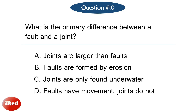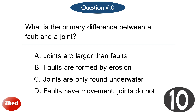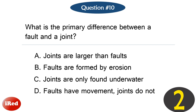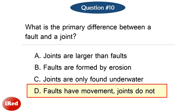Question number ten. What is the primary difference between a fault and a joint? The correct answer is letter D: faults have movement, joints do not.